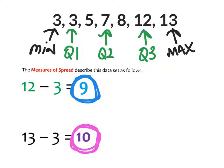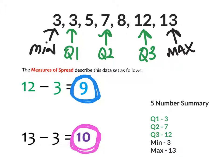You may hear references from time to time to something called the five-number summary. The five-number summary consists of the five values you need to find in order to determine IQR and range. When I ask you to give me the five-number summary and measures of spread, I'm asking you to identify the three quartiles, the minimum, and the maximum, and then give me the IQR and range by manipulating those values.